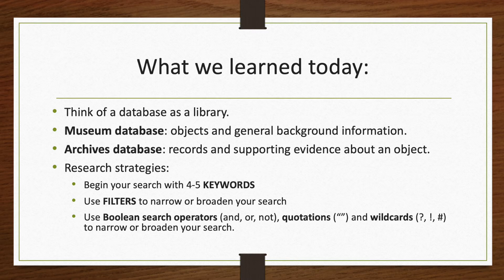Let's review what we learned today. Think of a database as a library. When you search a museum database, you will get information about their objects. When you search an archives database, you will get records and supporting evidence about the objects. When you begin your search, think of four to five keywords and use filters to help narrow or broaden your search. And lastly, use Boolean search operators, quotations, and wildcards to narrow or broaden your search.